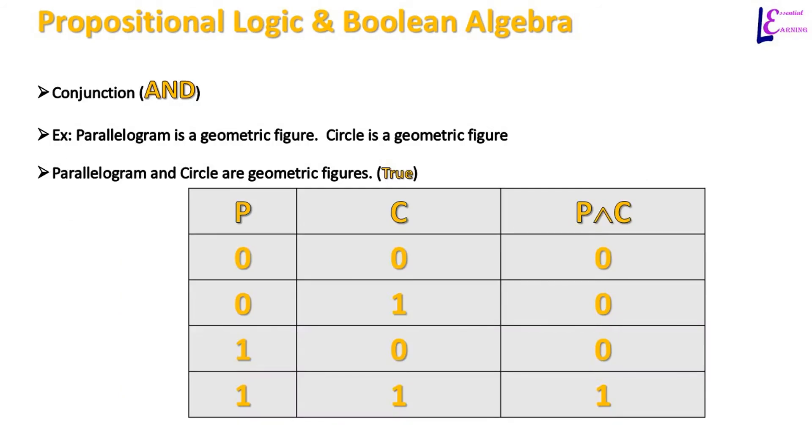Proposition which contains a statement connected by conjunction or AND is true when both statements are true. If any of the statements is false, proposition is false. For example, statements Parallelogram is geometric figure and circle is geometric figure, both are true. So we can write the proposition using AND as Parallelogram and circle are geometric figures. Truth table shows objects P and C with different true and false values represented by 1 and 0 and result of AND operation. You can see that when both P and C values are 1, result is 1. In other words, statement or expression is true. Negate any of the statements and proposition becomes false. In this case, the result is 0.